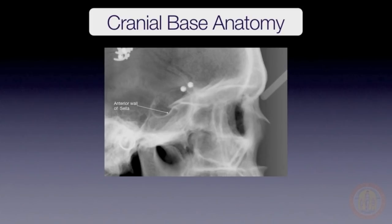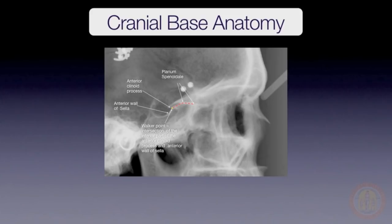Start with the radio-opaque surface that represents the anterior wall of sella. Move along that surface until the anterior wall intersects with the anterior clinoid process. This point, referred to as the Walker point, is stable after five to six years of age and serves as an important landmark to superimpose on. As you continue anteriorly along the sphenoid bone, you should note the planum sphenoidale, which is relatively flat and extends to the greater wings of the sphenoid. The greater wings demarcate the separation of the sphenoid and ethmoid bones.